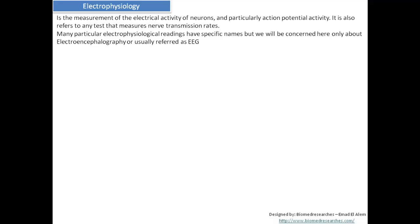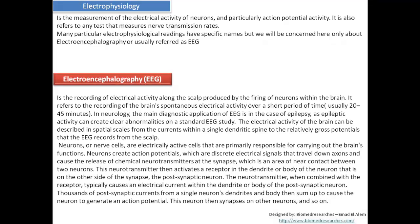Now that we understand electrophysiology, clinical neurophysiology, neurophysiology, and neuroscience, let us understand what electroencephalography (EEG) is. EEG is composed of three words: electro, encephalo, and graphy, abbreviated as EEG. It is the recording of electrical activity along the scalp — produced by the firing of neurons within the brain. We place sticky electrodes on the scalp, connect them to an amplifier which picks up and amplifies the signal, and display it using medical software for the doctors.